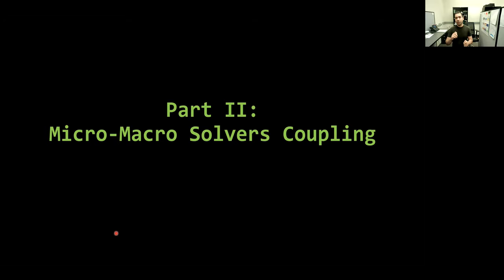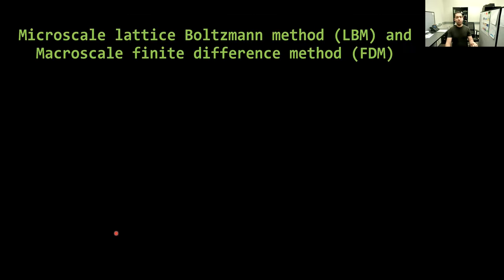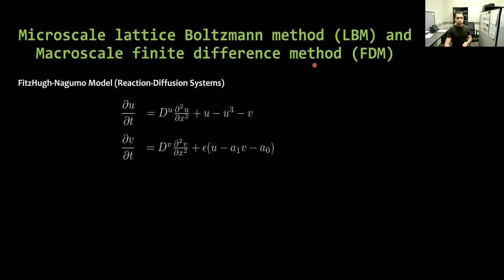So this was for the first part, or the largest part of the presentation. In the second part, I will illustrate how interface learning can be helpful if we need to connect or couple different levels of descriptions or abstractions. In particular, we consider the coupling between a microscale solver represented by the Lattice-Boltzmann method, or LBM, and a macroscale solver represented by the finite difference method, or FDM. We consider the FitzHugh-Nagumo model to explain the idea, where we have two variables, U and V, in the X direction, and we have some reaction and diffusion dynamics.